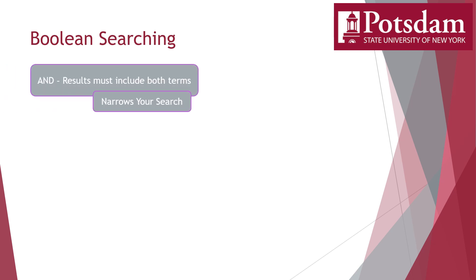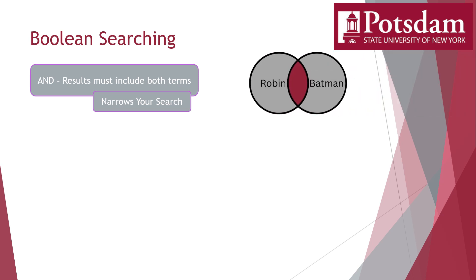AND will narrow your search. When you put AND between two search terms, both of those terms must be present in an item for the database to include it in your returns. So for this example, if you search for Robin AND Batman, the database will throw out every article that only mentions Batman and every article that only mentions Robin, and will just give you articles that mention both of them. You can use an AND search to refine your results — conduct an initial search for your main term, but then begin adding additional terms to narrow down that list of articles until you get the ones most relevant for your research.